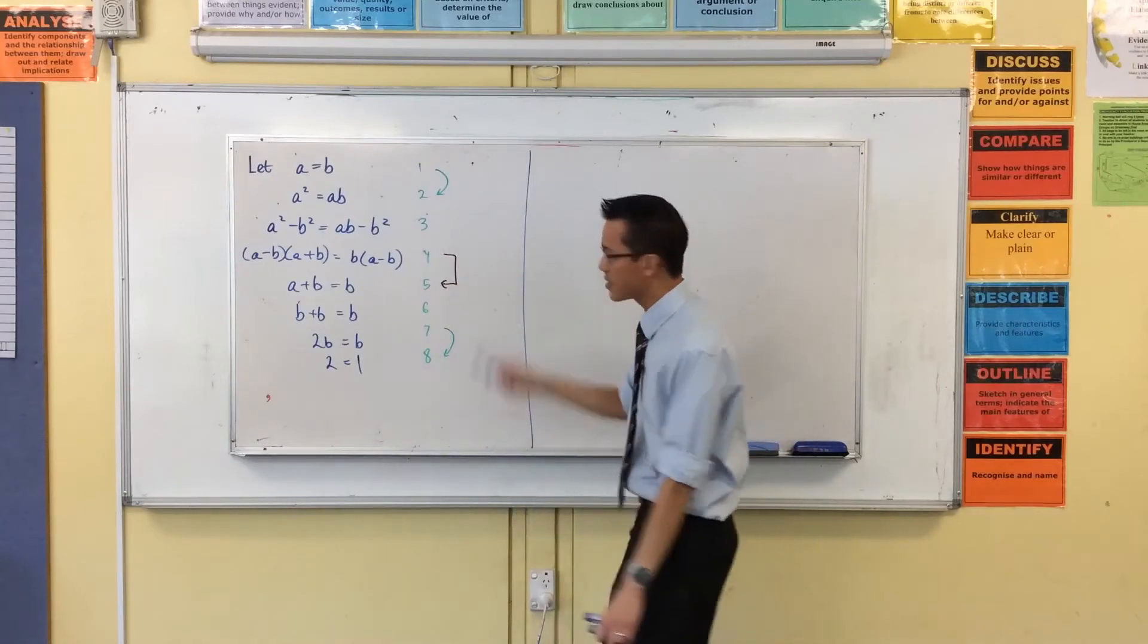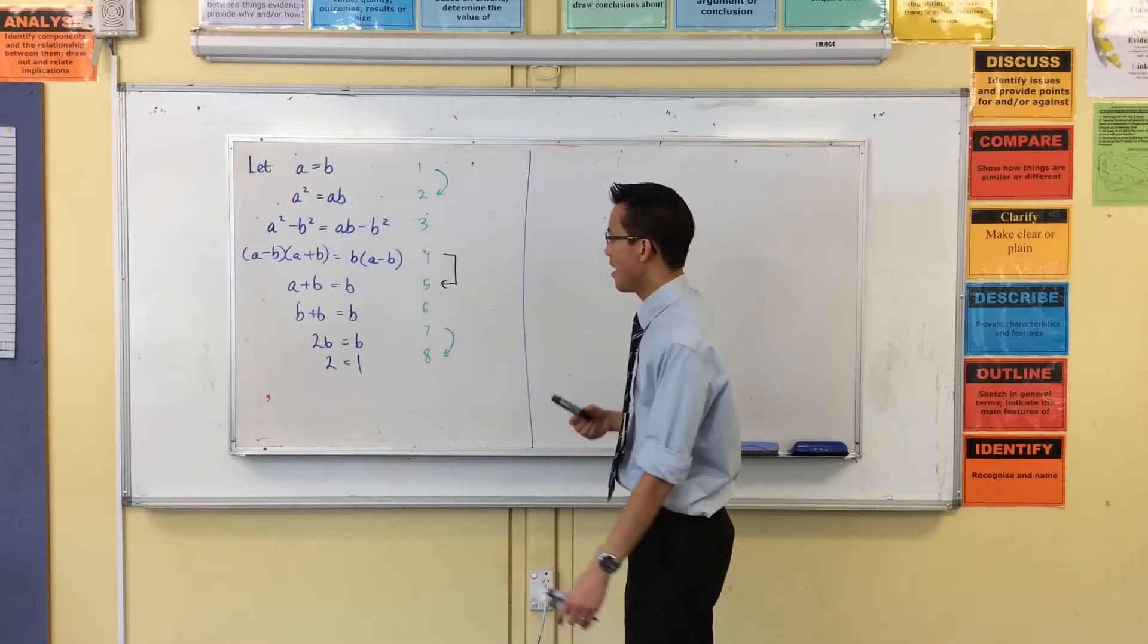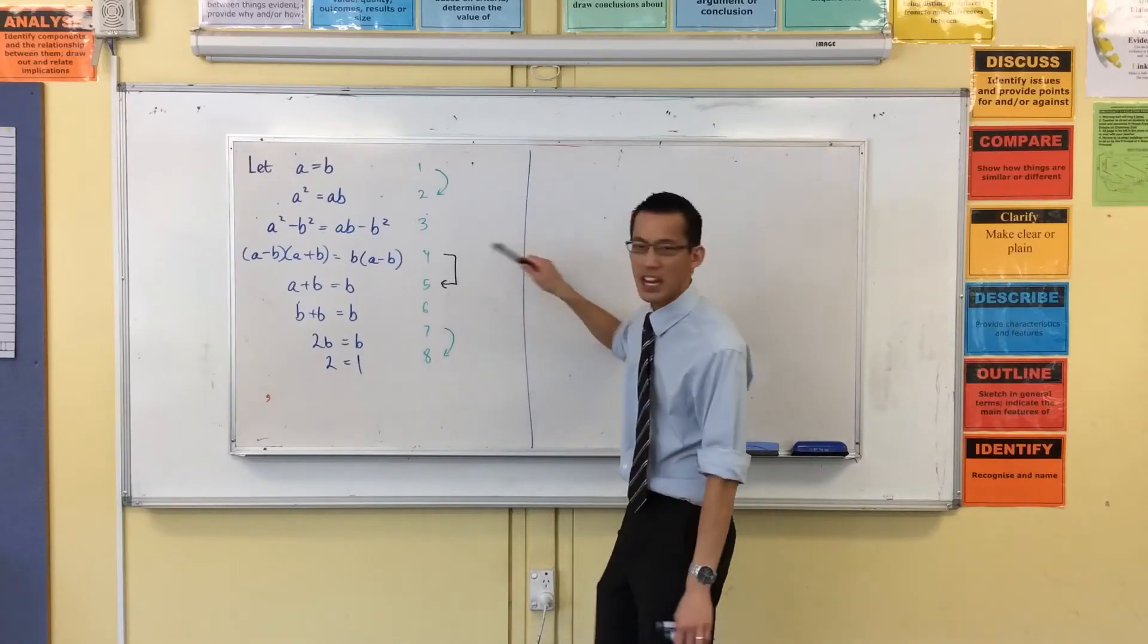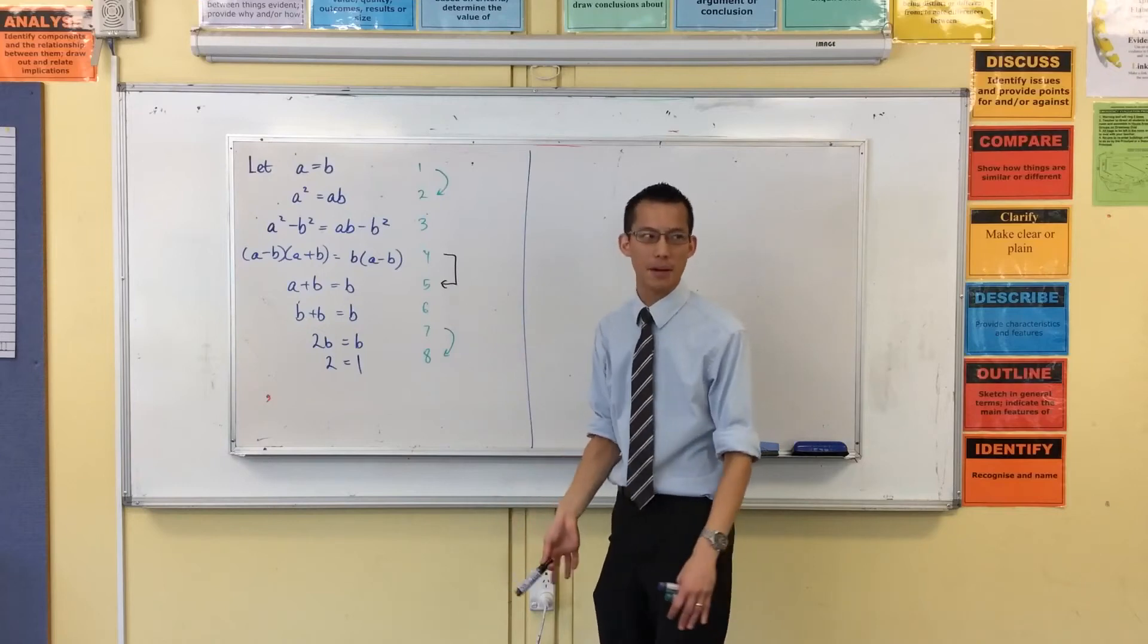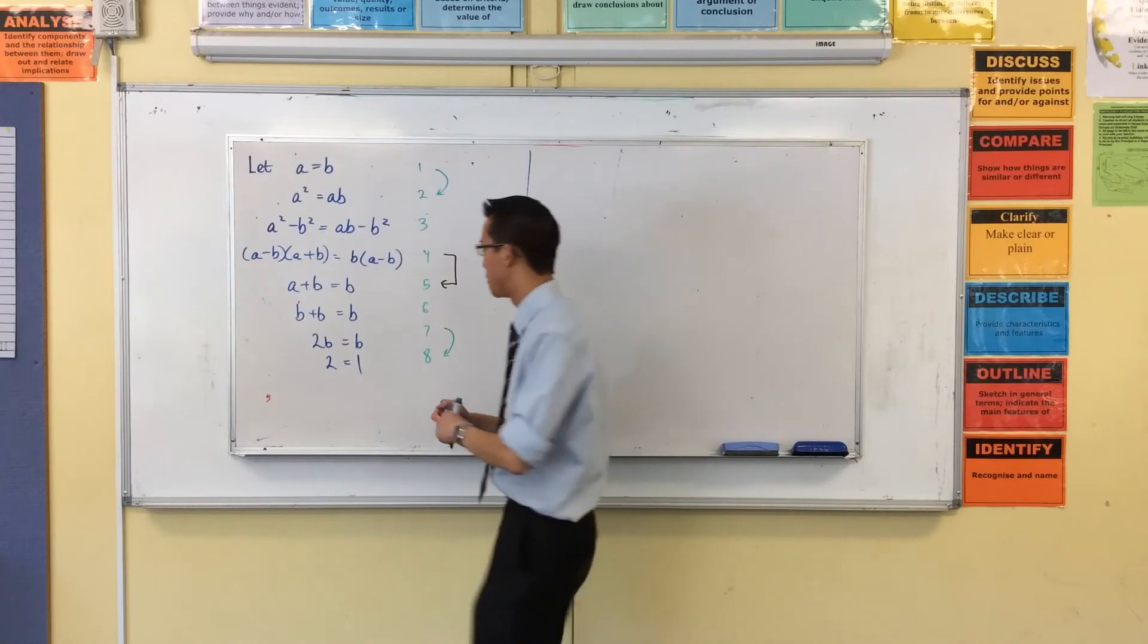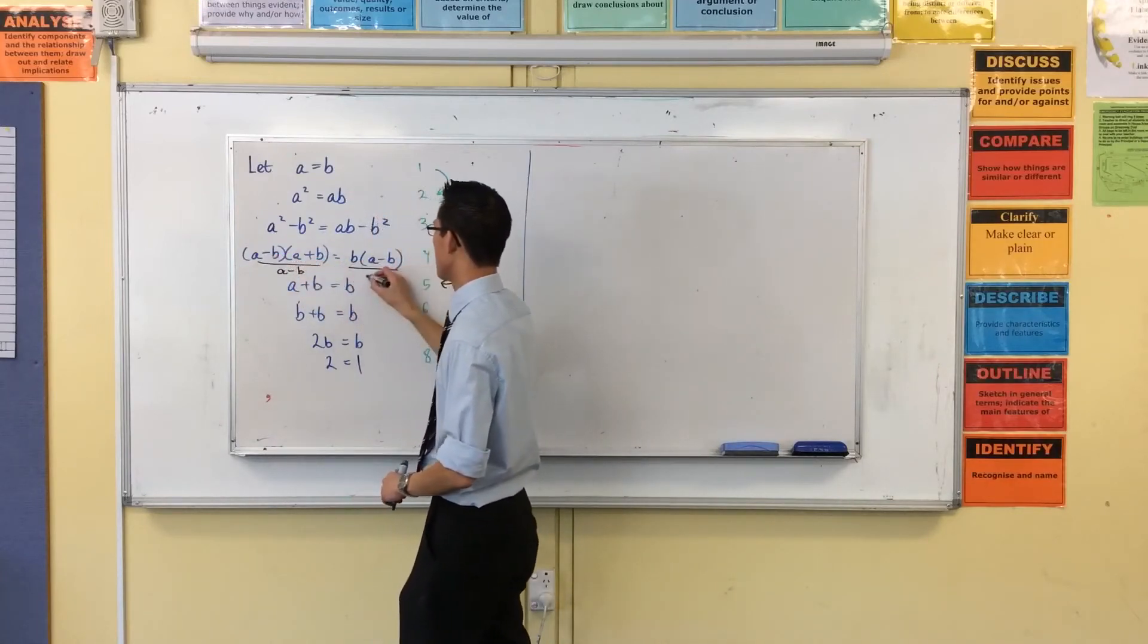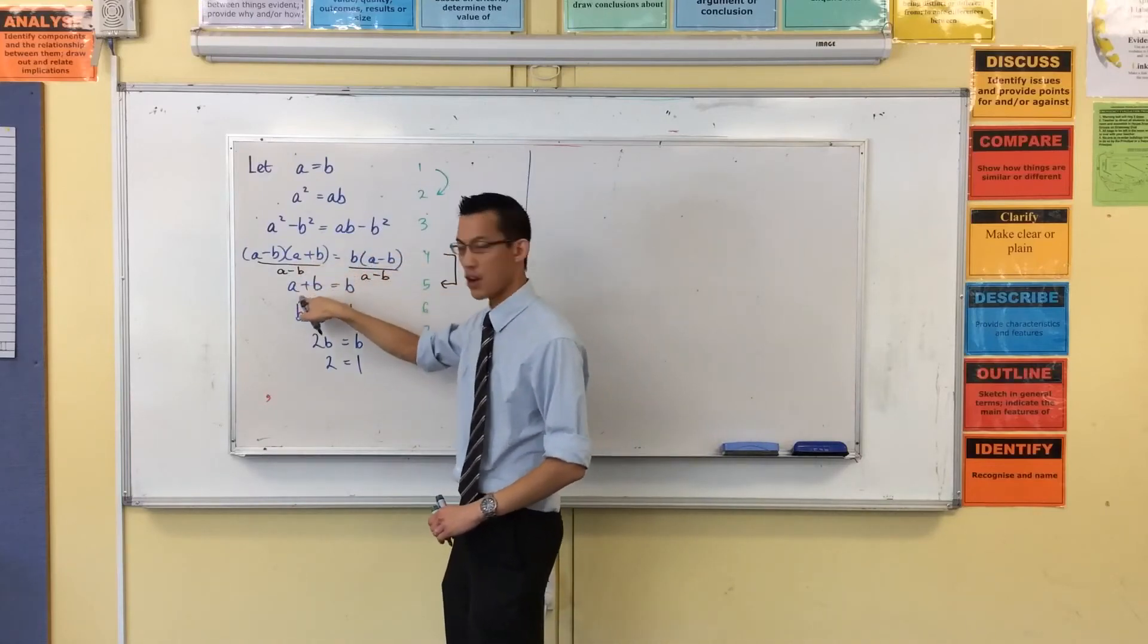So the question then becomes, why is this line a problem? Or why is the transition between those two lines a problem? And the reason why is you've got to think carefully about what's happening. What has changed from line four to line five is that I am dividing. But what am I dividing by? After I factorized, to go from this line to this line, I have to divide by this common factor, A minus B. That's how I end up with just B here and just A plus B over here.